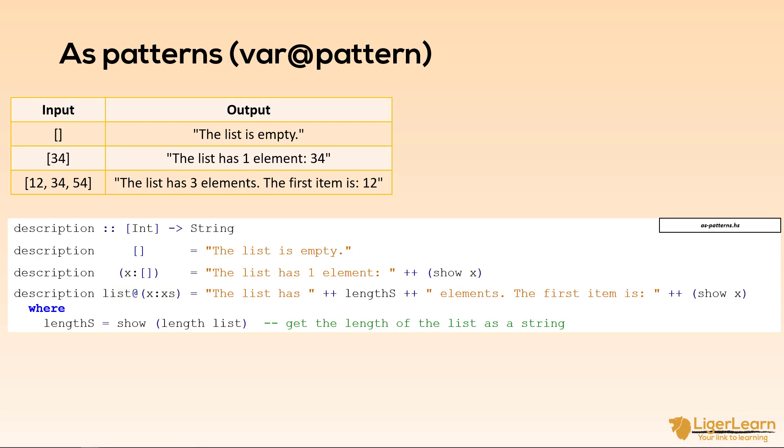We deconstruct the list like normal with the x cons x's here and if we were to leave it as this we now have variable names which we can use in our function body to refer to the first item in the list and the rest of the list.